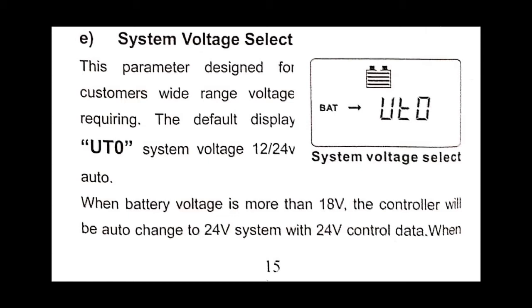And set parameters to UT1 or UT2. UT1 means 12V battery, UT2 means 24V battery. In my video, it shows how to select it.